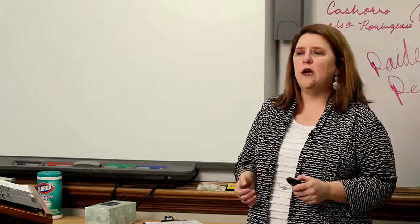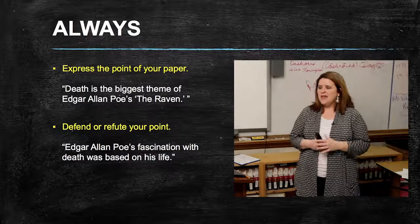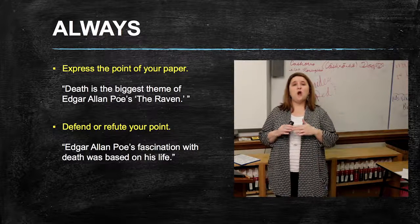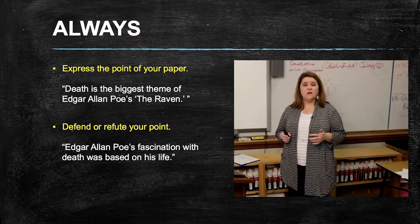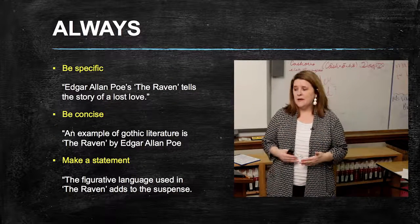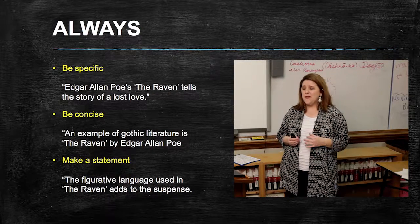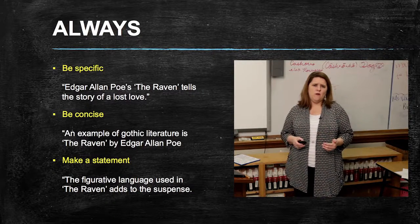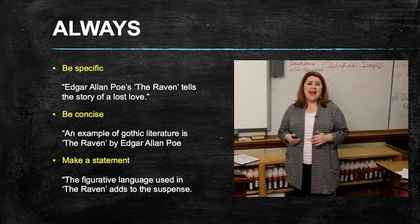Now for the do's and don'ts of the thesis statement. Always express the point of your paper — 'Death is the biggest theme of Edgar Allan Poe's The Raven.' Make sure that you always defend or refute your point — 'Edgar Allan Poe's fascination with death was based on his life.' Always be very specific — 'Edgar Allan Poe's The Raven tells the story of a lost love.' Be concise — 'An example of Gothic literature is The Raven by Edgar Allan Poe.' And lastly, make a statement — 'The figurative language used in The Raven adds to the suspense.'